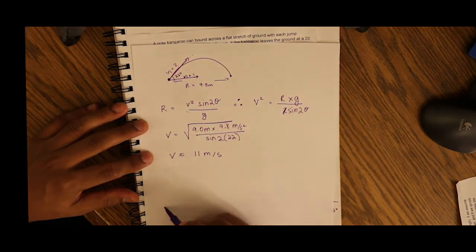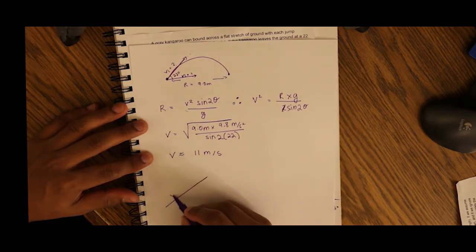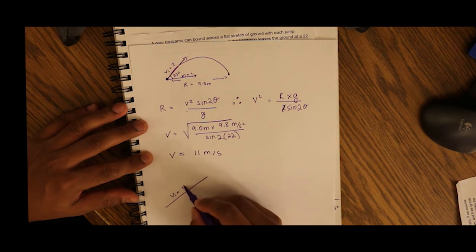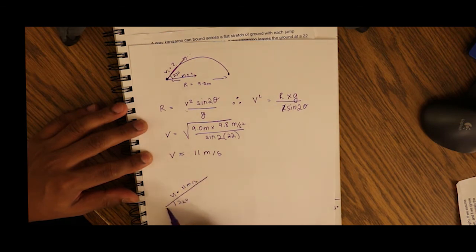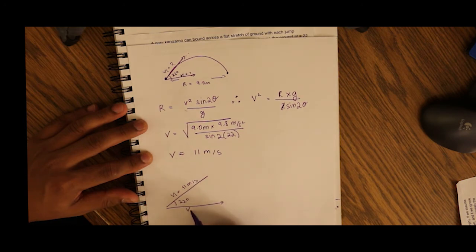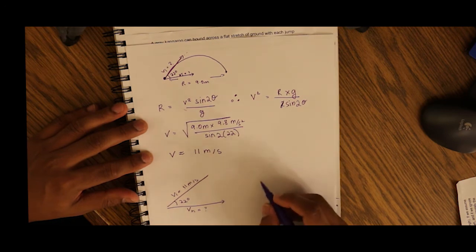So the horizontal plane, this is our v_i of 11 meters per second, our angle of 22 degrees, and our horizontal v horizontal is equal to...